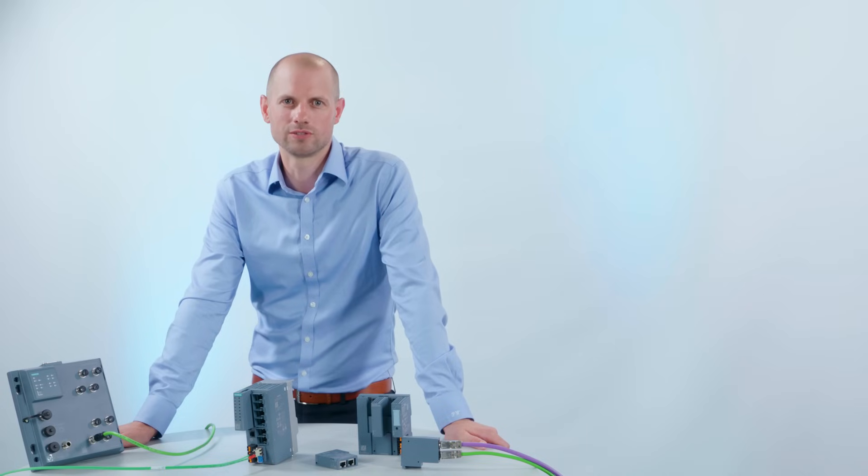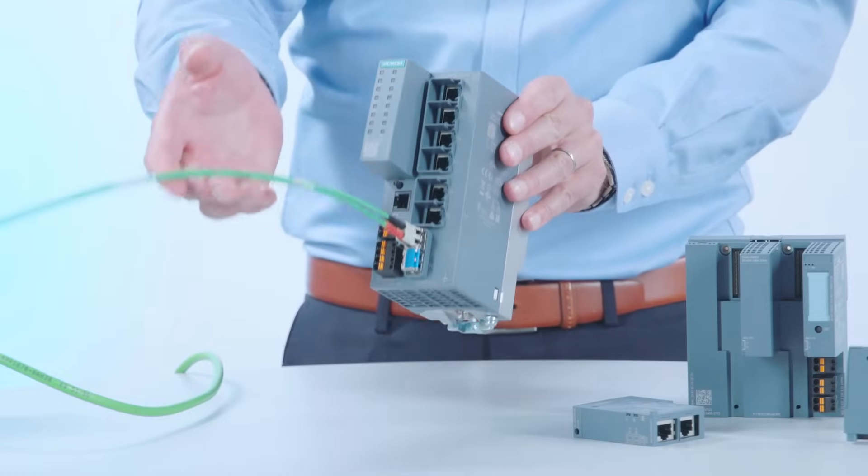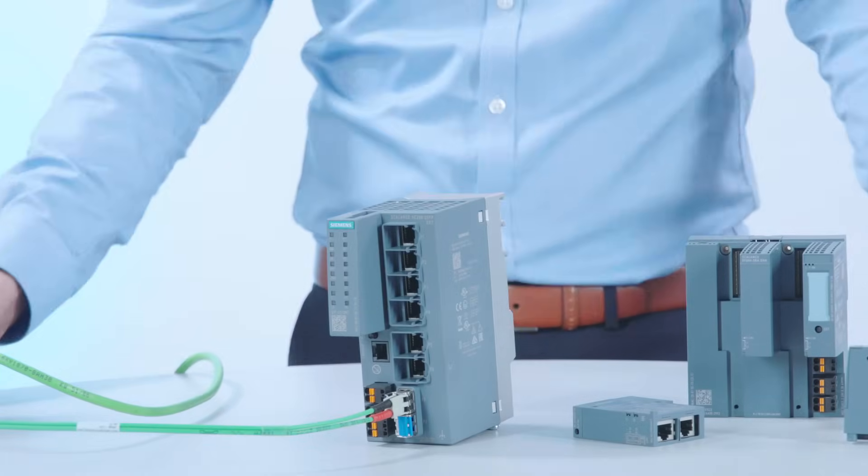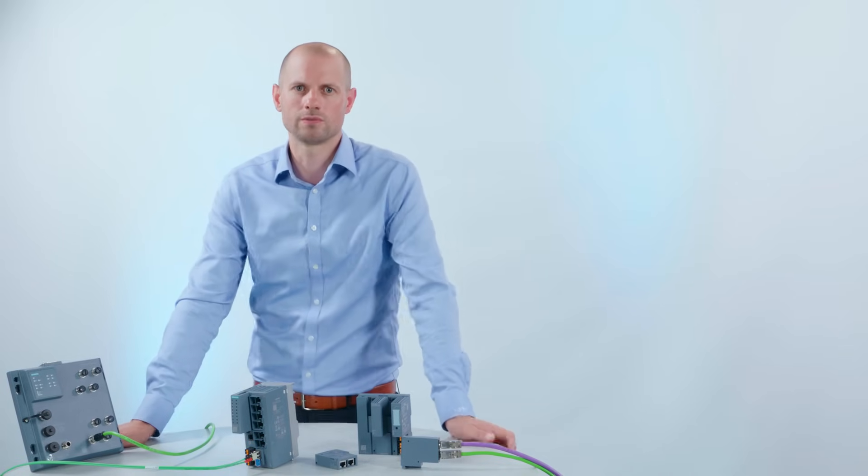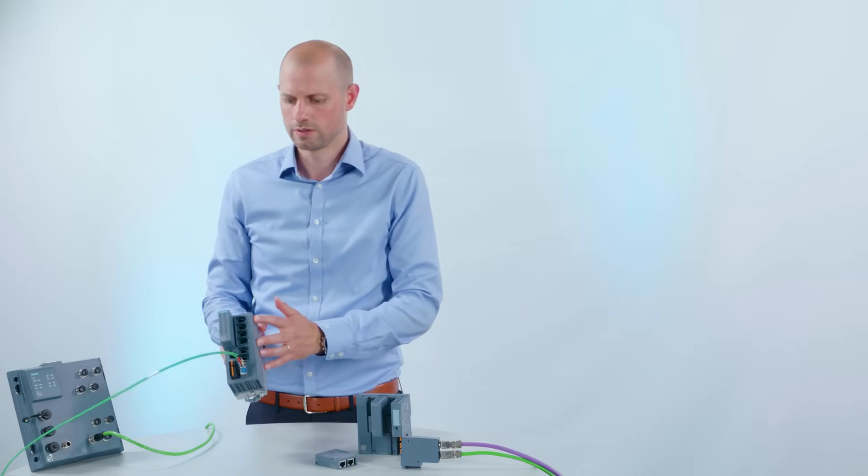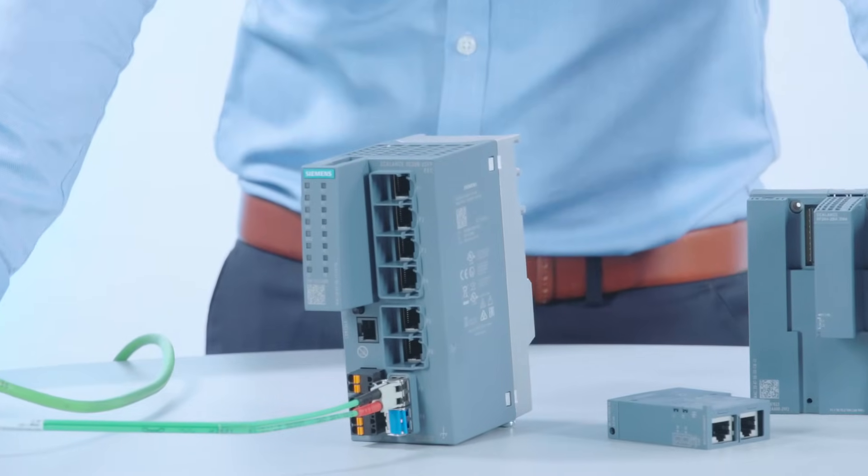Scalance XC200 switches offer up to 24 electric ports and there are versions with optical ports for large cable lengths, as well as gigabit switches for transmission rates up to 1000 Mbit per second. There are also EEC versions specifically optimized for process automation that offer conformal coating and NEMA Type 12 compliance.